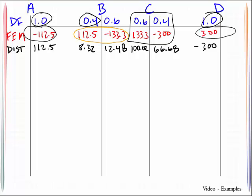The next step is going to be to handle the carryover. What this means is that whenever you do a distribution of the joint, if the members are fixed-fixed, which they are in our particular case, half of that moment carries over to the opposite side of the member.